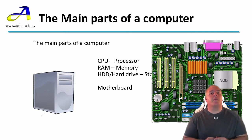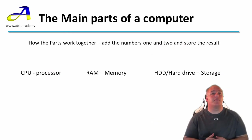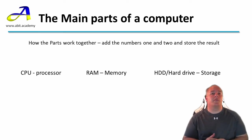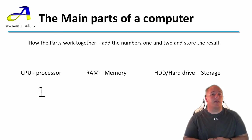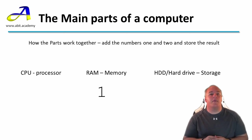Let's take a look at an example of how these components work together to add two numbers. The first thing I do is enter the first number on the keyboard — I have entered 1. As soon as you press the number 1 key, this action is passed to the CPU for processing. At this point the CPU doesn't know what to do with this number, so it moves it into RAM and waits for something else to happen.